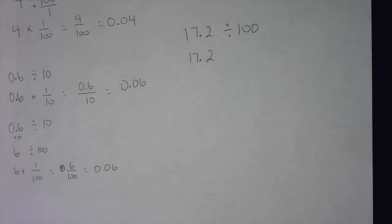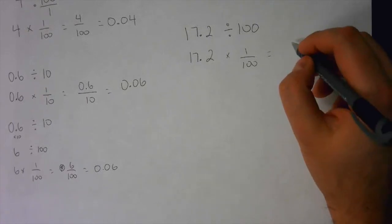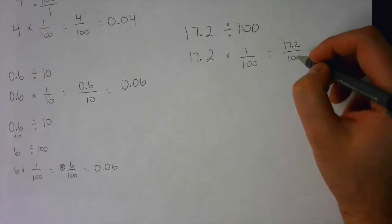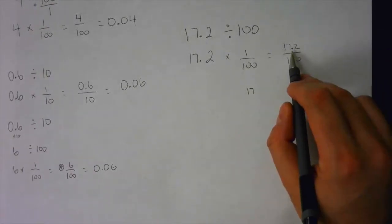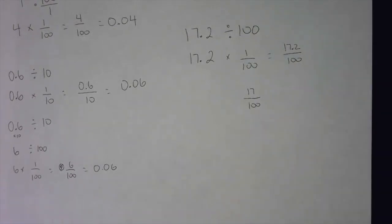But the divide by 100 changes to what? What does it change to? I should see every hand sky high right now because we've only done this about seven times today. What does divide by 100 change to?